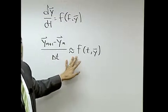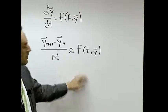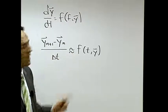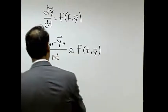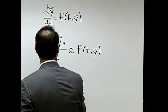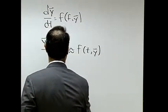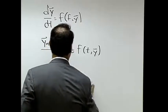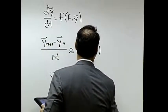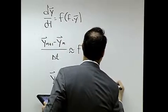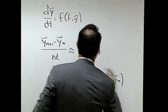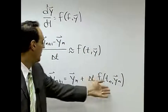Now notice what I can do with this: I can multiply by Delta t, I can move that to the other side, and what I end up with is y of n plus 1 equals y of n plus Delta t times f(t of n, y of n). And we'll evaluate this function at the current time.